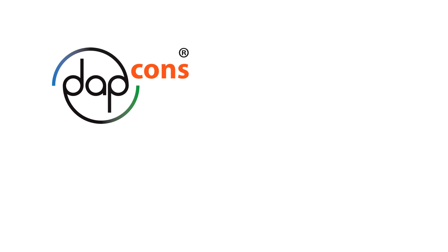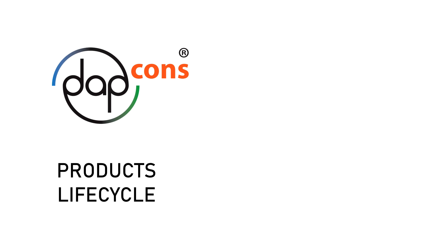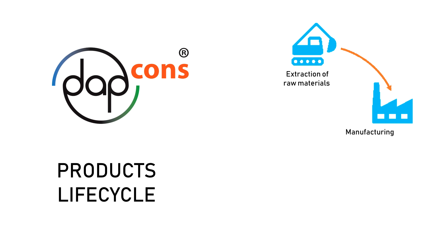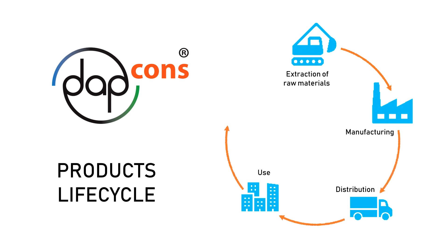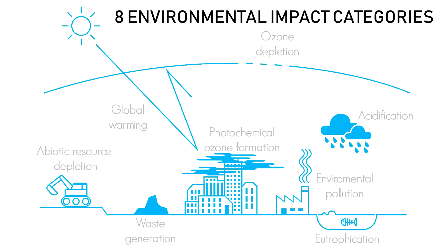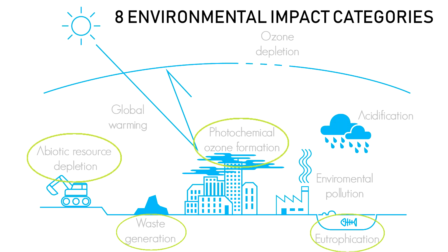The Environmental Product Declarations Programme, DAPCOMS, quantifies the impacts generated by construction products, considering their entire life cycle, from the extraction of raw materials to the end of life, passing through the manufacture, distribution, and use of the product. These environmental declarations take into account eight environmental impact categories, such as waste generation, eutrophication, depletion of abiotic resources, or photochemical ozone formation.